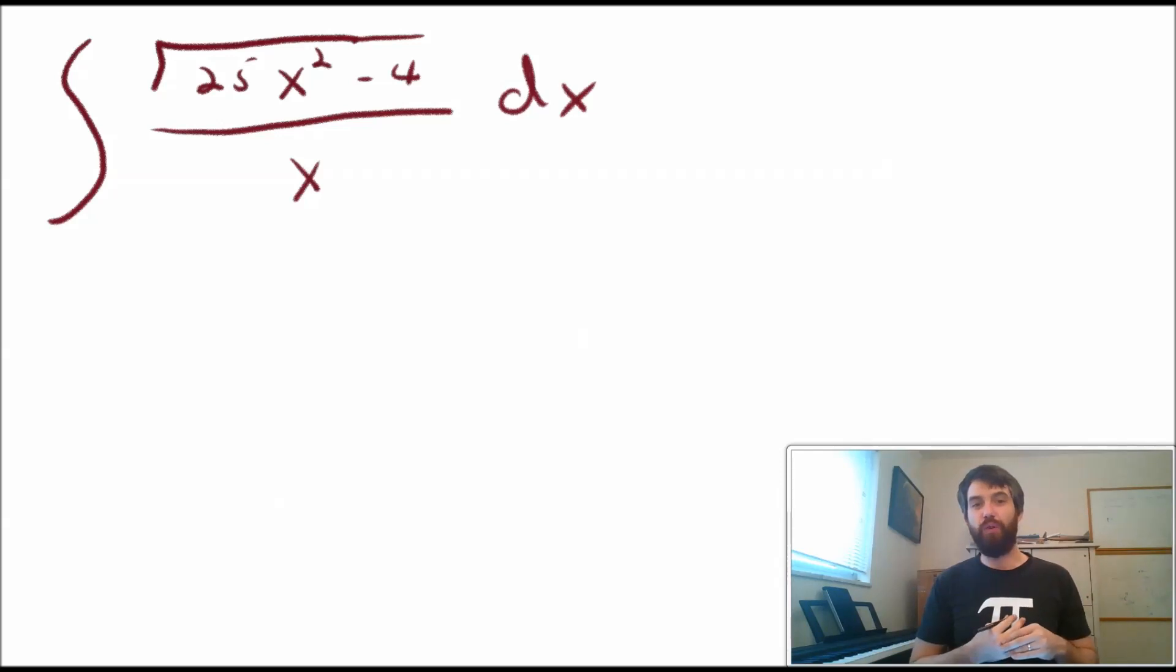This next type of integral is one that we should really start to recognize the particular form of. What I want to note here is that I have a something squared minus a number. Or it could be something squared plus a number or a number minus something squared. There's a bunch of different possibilities. The key part is to have this expression something like what occurs here in the numerator underneath the square root where I've got something squared minus a number. And that, to me, is going to have the alarm bell that's ringing out and is going to tell me to do trigonometric substitution.